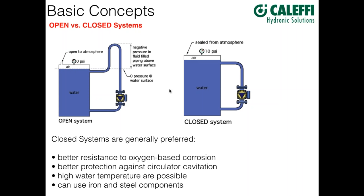There are two types of hydronic systems: open and closed. An open system has at least one point open to the atmosphere, which prevents the system from building up pressure. There are successful applications for open systems, but they have issues to respect. Any piping that goes above the water line in the tank is going to be under negative pressure, especially when the circulator is off. That's not necessarily a problem unless you have an air vent up there or if the pressure drops low enough that the water could actually flash from liquid into vapor.